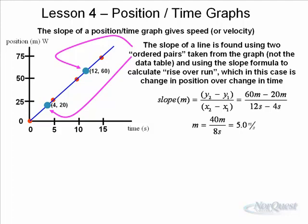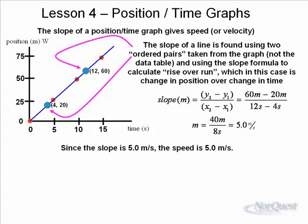These are the two ordered pairs. To take the slope, you use the slope formula from math: y2 minus y1 over x2 minus x1. The y2 is 60, the y1 is 20, the x2 is 12, and the x1 is 4. Ordered pairs are written as x and y. So the slope m is 40 meters — 60 minus 20 — and it traveled that 40 meters in 8 seconds. The speed is 5.0 meters per second.